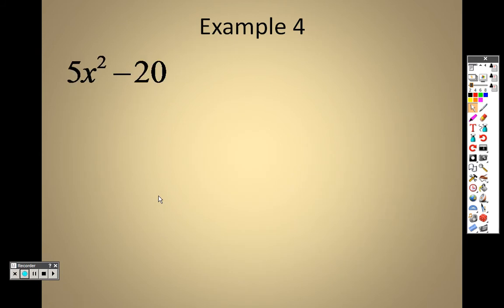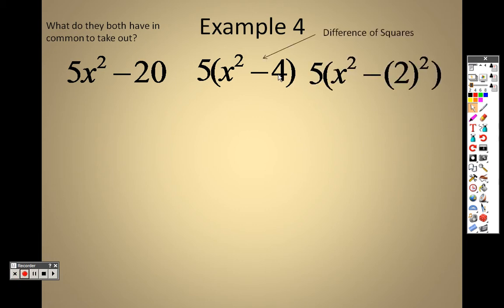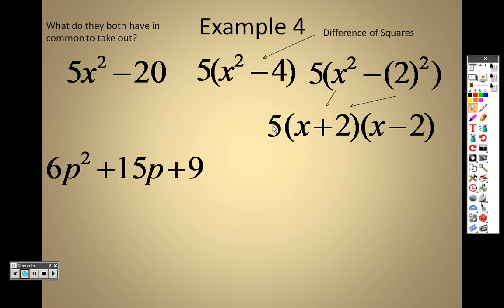So example 4, taking a look at that, what do they both have in common so I can take them out of both? Well, they both don't have an x, but they both do have a 5. If I took a 5 out of both these, I get x squared minus 4. What you need to realize is after you take an item out like that, can you still keep factoring this? Well, that's squared. Can I rewrite 4 squared? You betcha. I can rewrite that as a difference of 2 squares. I could write that as x squared and a 2 squared. Since it's an x and a 2, I can rewrite that as x minus 2 and x plus 2 because of the difference of squares formula, and I still have that 5 on the outside.